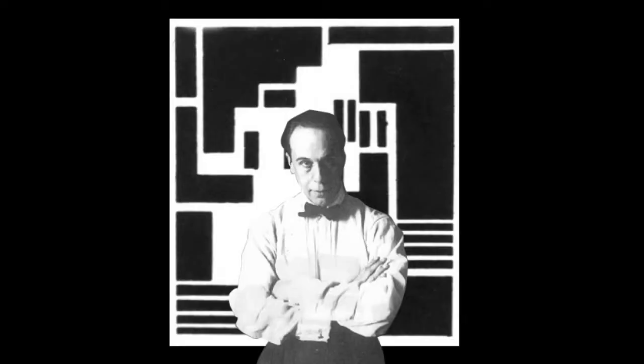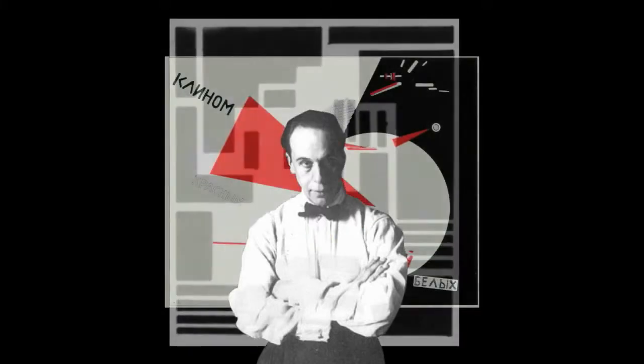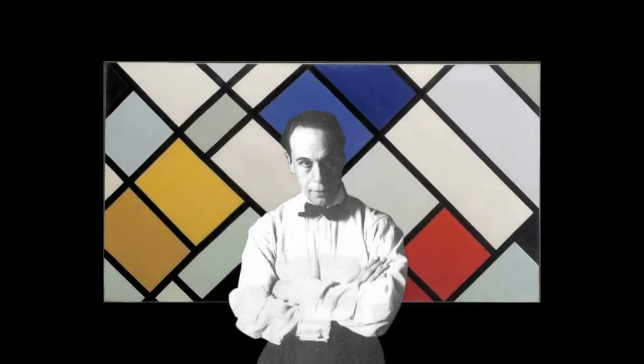Van Duisburg quietly began exploring new artistic styles behind Mondrian's back — much like Jafar was scheming behind the Sultan's back in Aladdin. This led to Van Duisburg adopting the oblique designs of Lezitski, where he made a series of paintings in which the familiar rectangular blocks were turned at 45-degree angles. This was a huge slap in the face to Mondrian, who felt that diagonal compositions introduced elements of personal expression, violating the universal original concepts behind De Stijl.